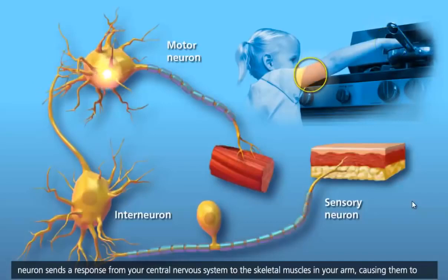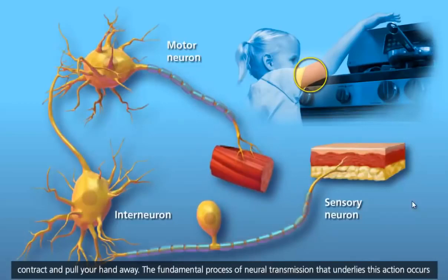From there, a motor neuron sends a response from your central nervous system to the skeletal muscles in your arm, causing them to contract and pull your hand away.